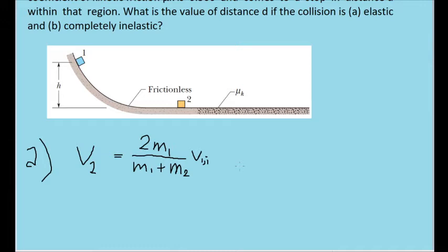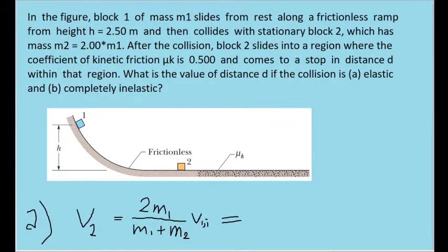It's not too hard to derive, but since this specific formula is given by the textbook and most physics textbooks, it's a pretty good starting point. The problem tells us that the mass of block 2, M sub 2, is equal to 2 times the mass of block 1.